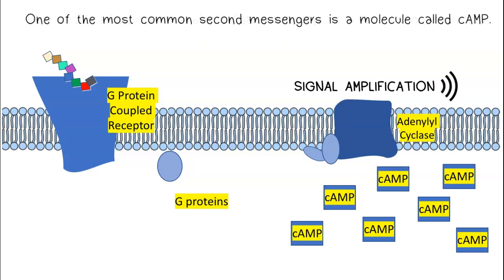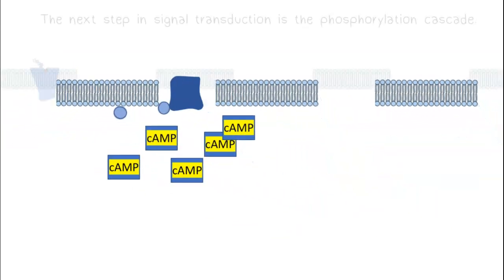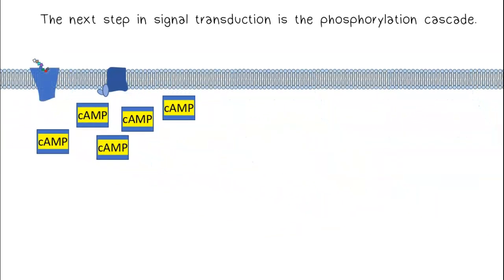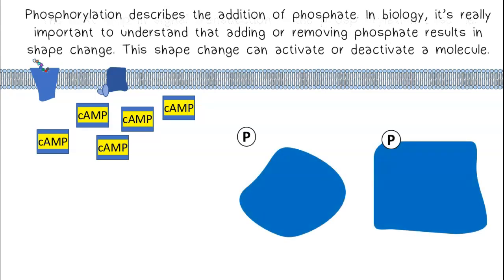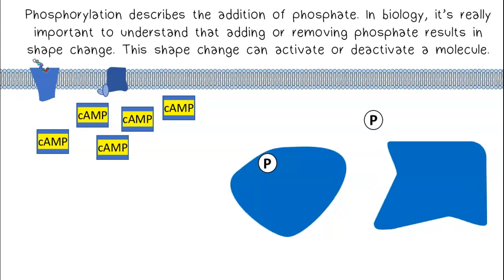One of the most common second messengers is a molecule called cyclic AMP. The next step in signal transduction is the phosphorylation cascade. Phosphorylation describes the addition of phosphate. In biology, it's really important to understand that adding or removing phosphate results in shape change. This shape change can activate or deactivate a molecule.